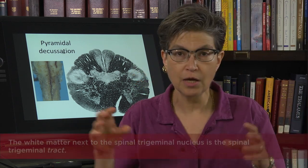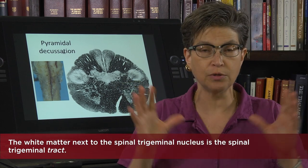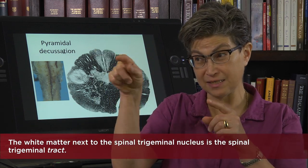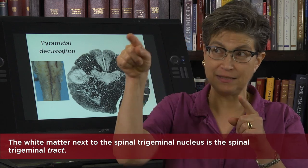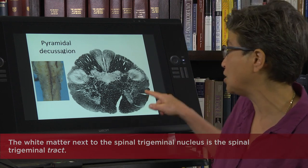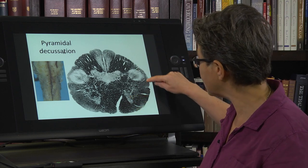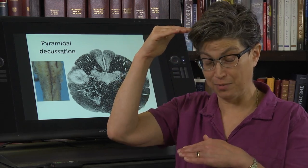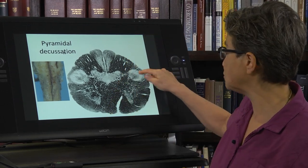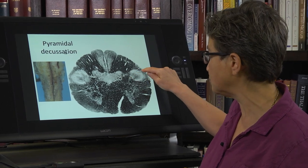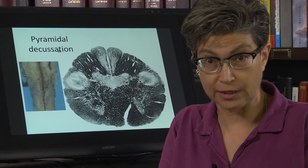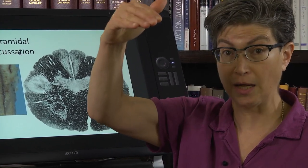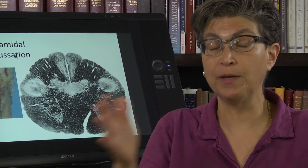The trigeminal nerve carries sensory information — primarily from the face and oral cavity — entering at the side of the pons. It doesn't just deal with the pons; it sends its axons down a tract all the way to the cervical cord. This is the spinal trigeminal tract. As it travels down the length of the medulla and into the pons, axons give off collaterals into the spinal trigeminal nucleus.